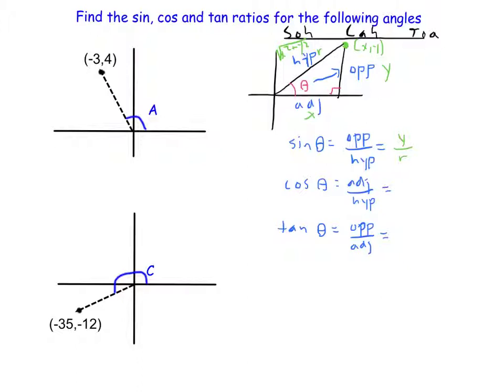SOH CAH, CAH, adjacent over hypotenuse. Adjacent is this horizontal distance, and that's along the X axis. The hypotenuse is R. And TOA, opposite, remember that's vertical, that's going to be Y over adjacent, horizontal, and that's X.